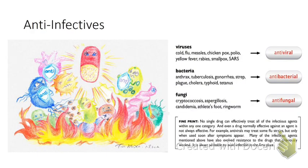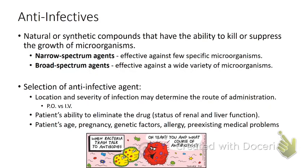Viruses get antivirals, bacteria get antibacterials, and fungi get antifungals. Anti-infectives are narrow or broad spectrum - narrow means only good against specific things, broad spectrum means they kill a lot of things. When you get an infection, you usually start on broad spectrum until they find out what it is, then adjust. PO versus IV determines how bad the infection is. Antibiotics help the immune system - they kill bacteria and let your immune system mop it up. Maybe your immune system doesn't work well or the infection is too big for it to kill on its own.